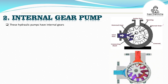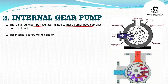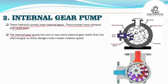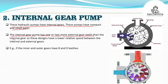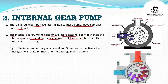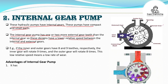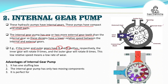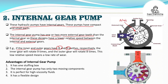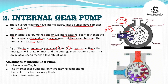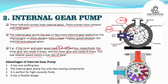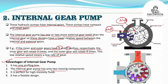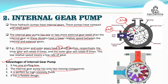Number 2: internal gear pumps. These hydraulic pumps have internal gears with compact and small parts. The internal gear pumps have one or two more external teeth than the internal gears, so the design has low relative speed between the internal and external gears. For example, if the inner gear has 8 teeth and the outer gear has 9 teeth, the inner gear will rotate 9 times while the outer gear rotates 8 times. This low relative speed means a low rate of wear. Advantages: it has one stuffing box, only two moving components, is perfect for highly viscous fluids, and is flexible in design.